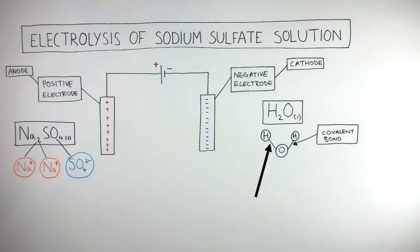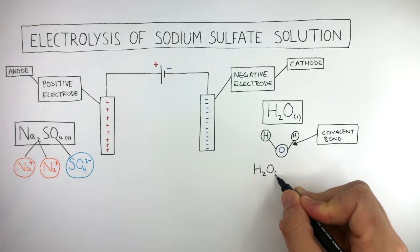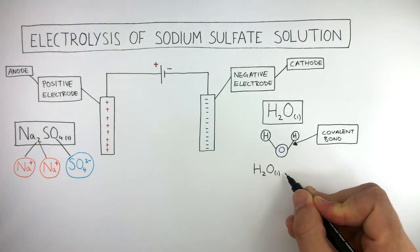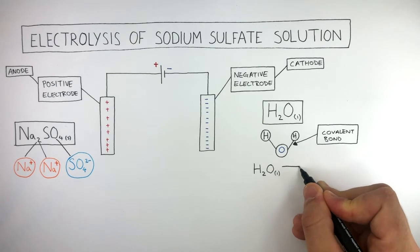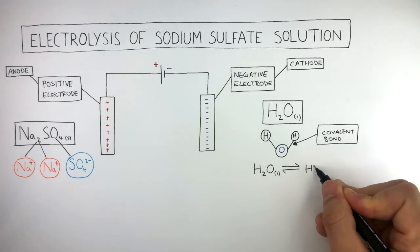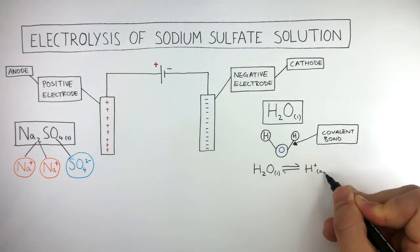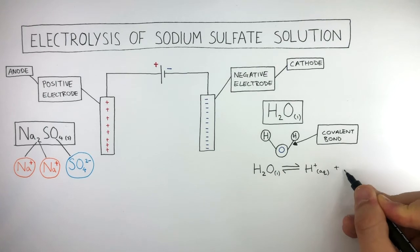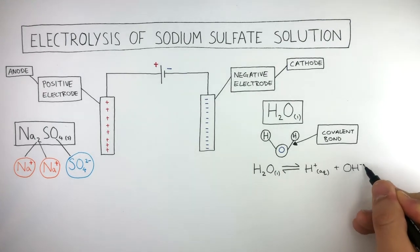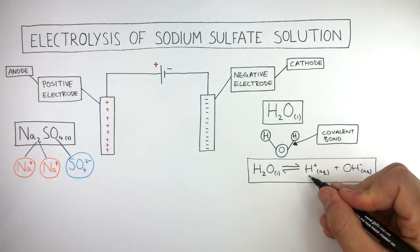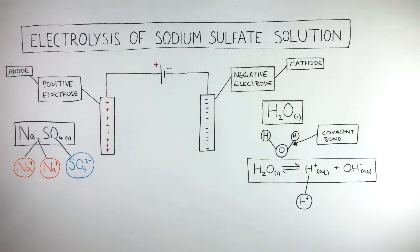The covalent bond breaks, and we can show this in a balanced equation where H2O (l for liquid) reversibly forms H+ (aq) for aqueous plus OH- (aq) for aqueous. A hydrogen ion forms and a hydroxide ion forms.